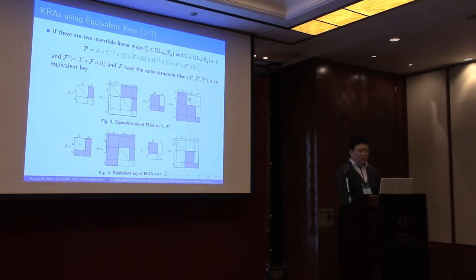If there are two invertible linear maps, sigma and omega, satisfying these equations, and F-prime and F-hat have the same structure, then this is an equivalent key of the secret key. Here, the same structure means the same white part in coefficient matrix. So we can find equivalent key for F, this for F-bar. Here, diagonal blocks are identity submatrices.